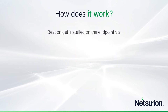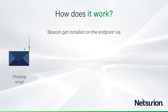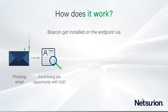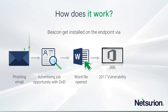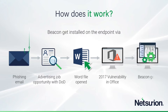And then there is the oldie but goodie: phishing email. Earlier this year, we saw an attack advertising a job opportunity with, surprisingly, the Department of Defense. If you fell for it and double-clicked the Word file, it looked to see whether you had an old 2017 vulnerability in Office — figuring that if you fell for this kind of lure, you probably hadn't updated Office in a while. That resulted in a series of actions that ultimately got the beacon installed.